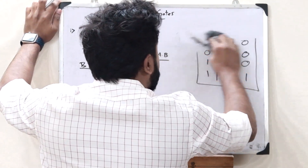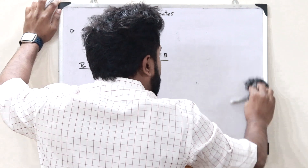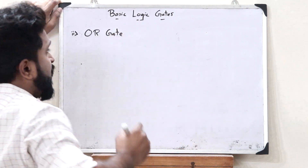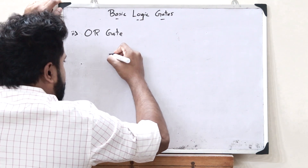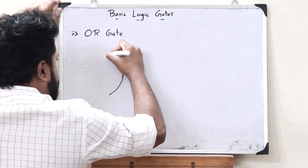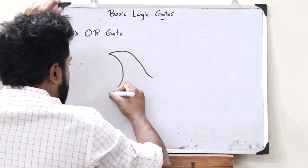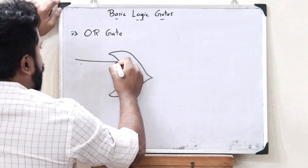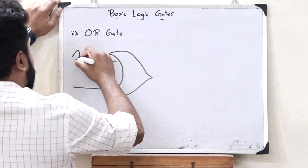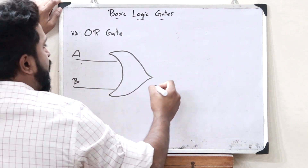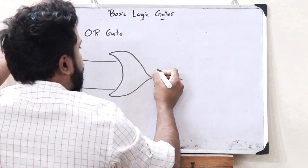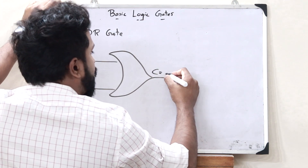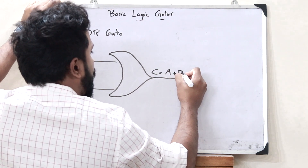The next logic gate is what we refer to as an OR gate. An OR gate is represented like this — it will have two inputs, A and B, and one output C, which performs the operation C is equal to A OR B.